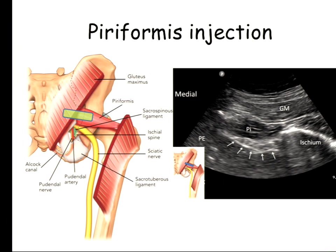You can see the gluteus maximus muscle, the piriformis muscle, the sciatic nerve, and some vessels — in real life you can see pulsation. You also see the peritoneum there. These are the important structures you need to see, because you don't want your needle to end up in the wrong place. You don't want to be in the wrong muscle, and you don't want to puncture the artery and create a hematoma. By the way, this is the inferior gluteal artery.